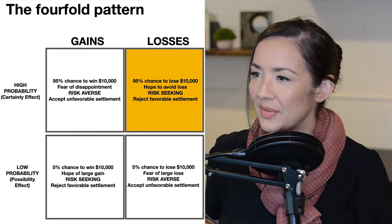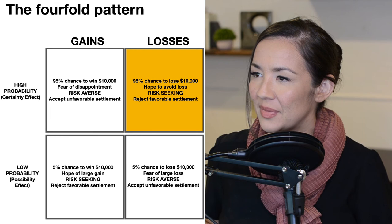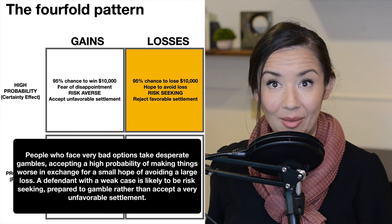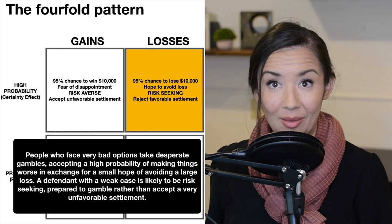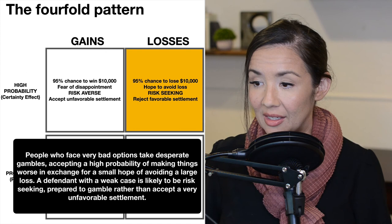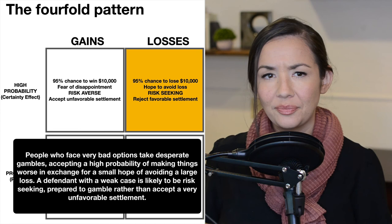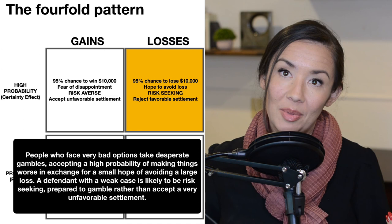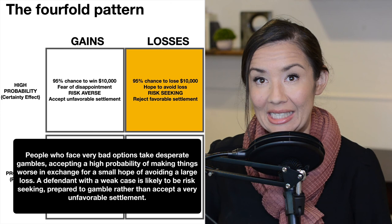The final quadrant — high probability of losing — is perhaps the most troubling. When faced with bad options, we tend to be risk-seeking. People accept a high probability of making things worse in exchange for a small hope of avoiding a loss. A defendant with a weak case is likely to gamble rather than accept an unfavorable settlement. This is the double-or-nothing approach: you've already lost a lot, so why not try again? This is when people get into really bad situations.